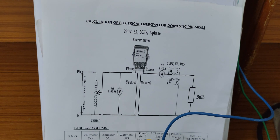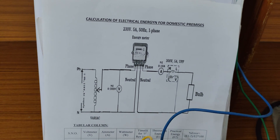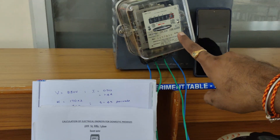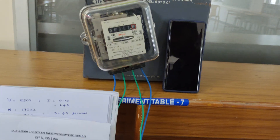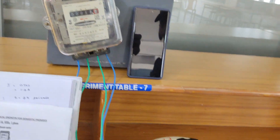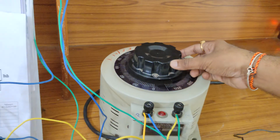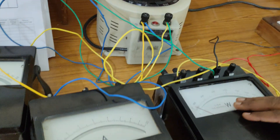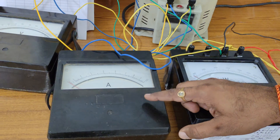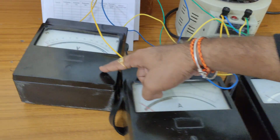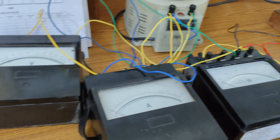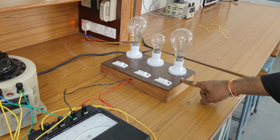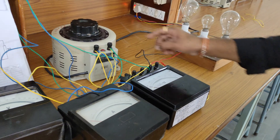Observe our practical connections right now. We are having an energy meter — this one is our energy meter. Followed by this one is the variac part — this one is a single phase variac. We are having a wattmeter — observe, this one is the wattmeter. And this one is the voltmeter. And these are the loads — we are having three bulbs. These are the loads. Let me explain the connections.